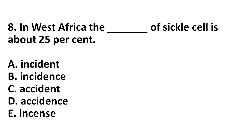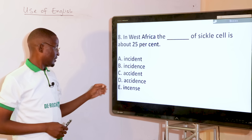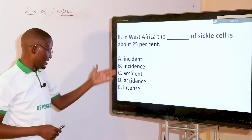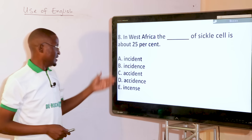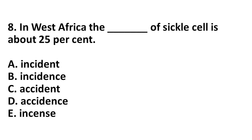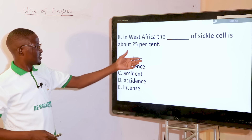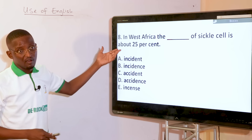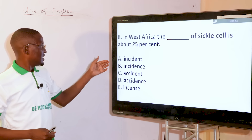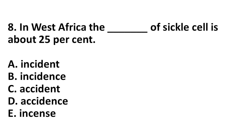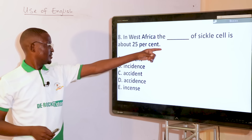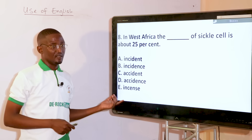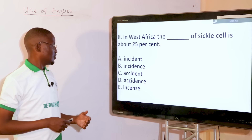In West Africa, the dash of sickle cell is about 25%. This is about right choice of words — often confused or misplaced words. The options are: incident, incidents, accident, accidents, incidence. Incidence is about range, not occurrence, and it is not accident in this context. The answer is incidence — option A — the incidence of sickle cell is about 25%.